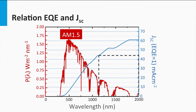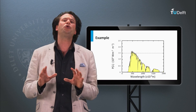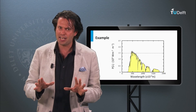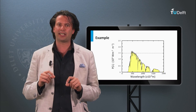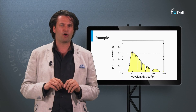Let's consider crystalline silicon, which has a bandgap of 1.12 eV. This equals a wavelength of 1107 nm. We then arrive at a theoretical current density for crystalline silicon of 44 mA per square centimeter. I will show you an easy way to estimate the current density using a simple approximation of the solar spectrum.